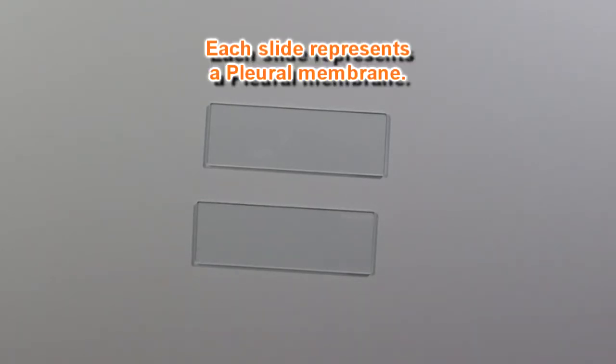So here I've got two glass slides, and I'm going to use these slides to demonstrate the function of pleural fluid. Now each one of these slides represents the pleura, the parietal pleura and the visceral pleura. And the fluid that I'm going to put on the slides, that'll represent the pleural fluid.